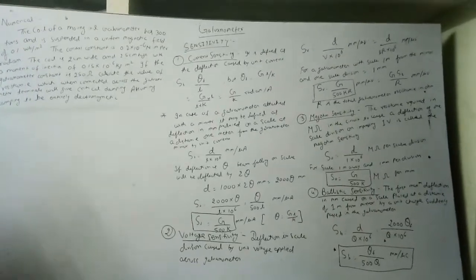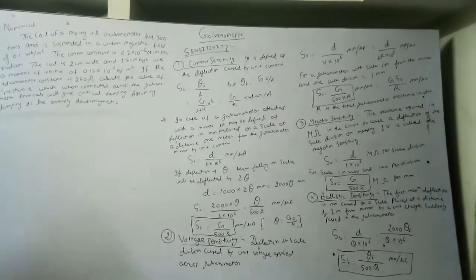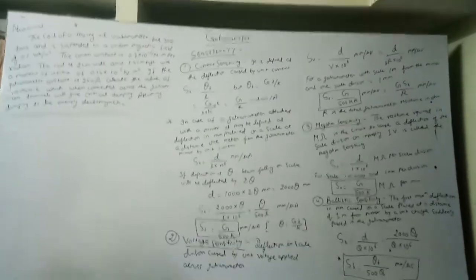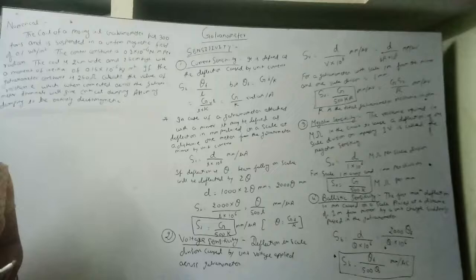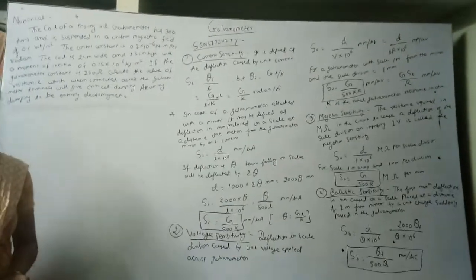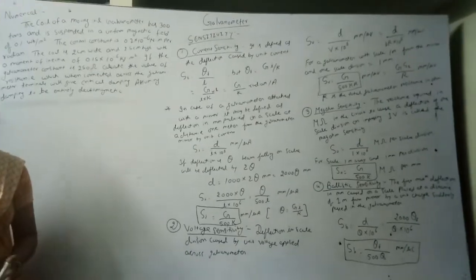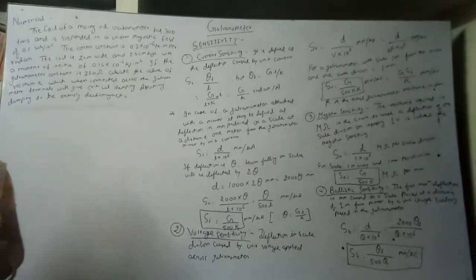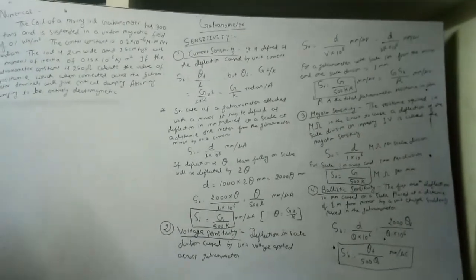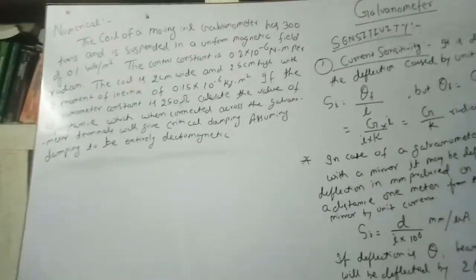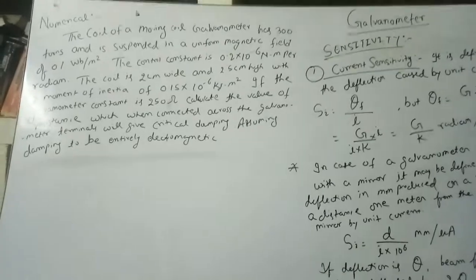Hello students. In the previous lecture we studied about the galvanometer damping mechanism — that is, how much external resistance should be added in the circuit so that damping of the galvanometer reaches a steady state operation, meaning zero damping. On the basis of that topic, here we will solve a numerical. So first of all, read the numerical and write the given data.